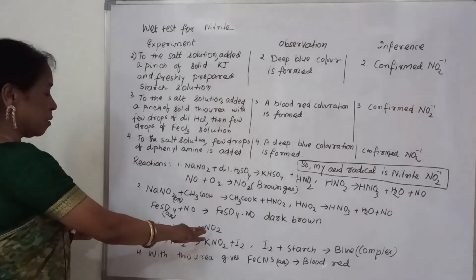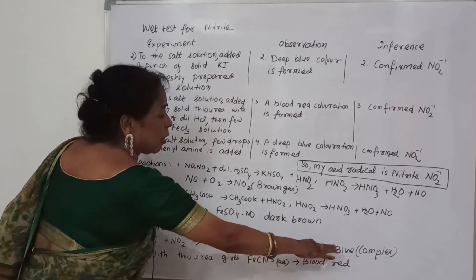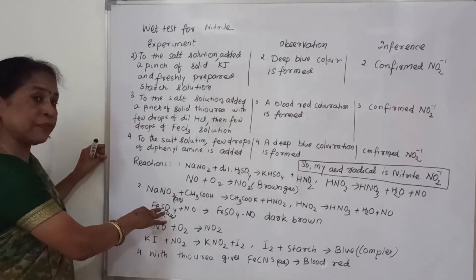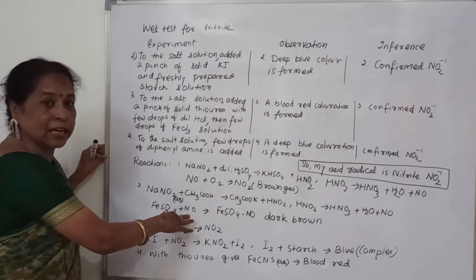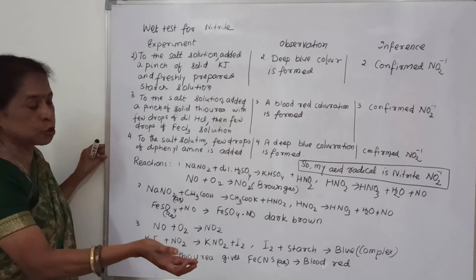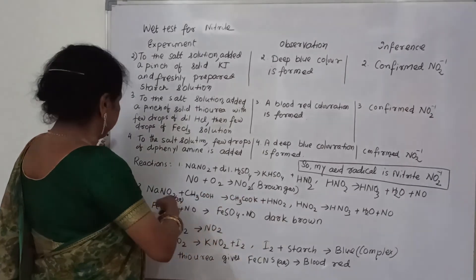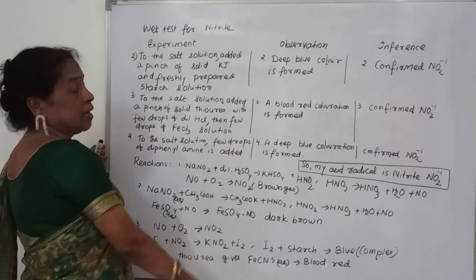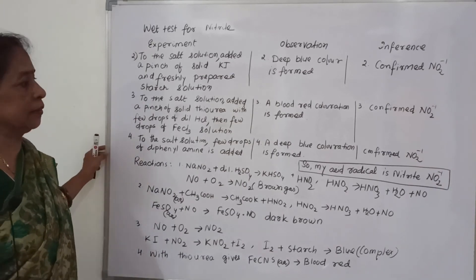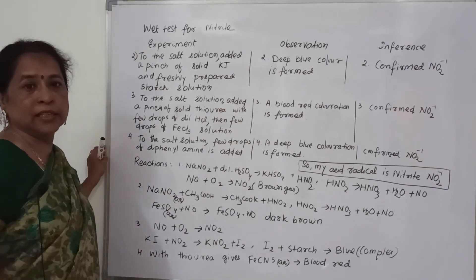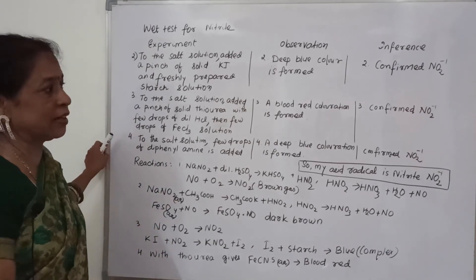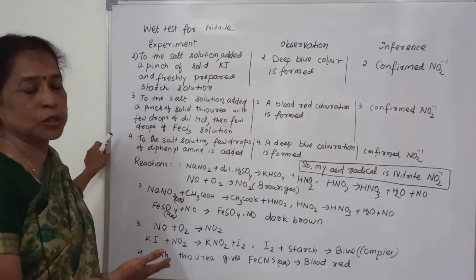With potassium iodide, due to complex formation with starch, blue color is observed. With FeSO₄ solution, nitric oxide compounds give dark brown color that later may change to black. These are the chemical reactions of nitrite.